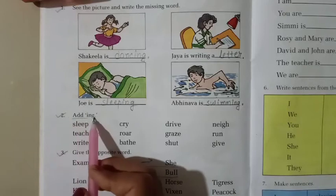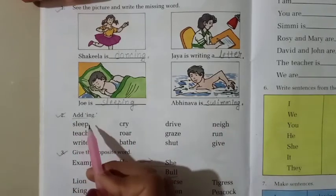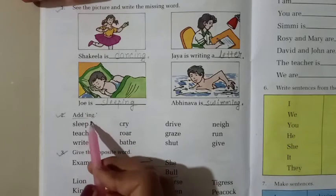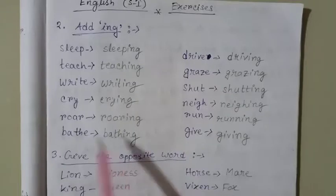Number 2. Add ing. These are the action words. You have to add ing at the end of the word. So do it. Students, look.